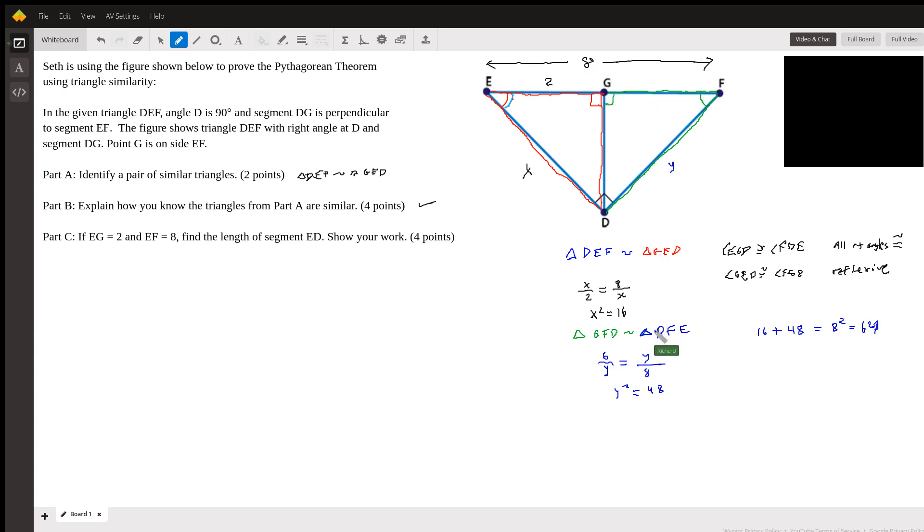And so we just proved the Pythagorean theorem using altitude on hypotenuse twice: once for the red and the big blue, and then again for the green and the big blue. And that allowed us to prove the Pythagorean theorem.